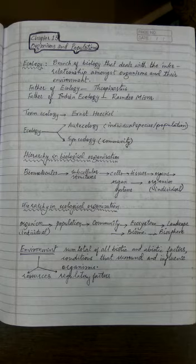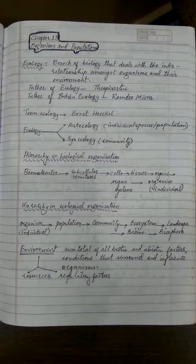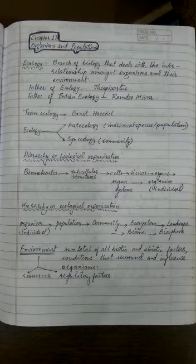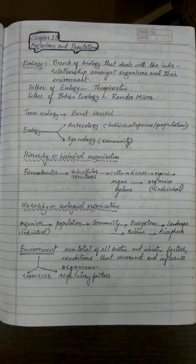We learned about the definition of ecology — that it is the branch of biology which deals with the relationship between organisms of different types as well as organisms of the same type, meaning within the species and between different species. We can call these intra-specific and inter-specific interactions. Not just interactions among living factors, but also the interaction of organisms with their environment is studied under ecology.